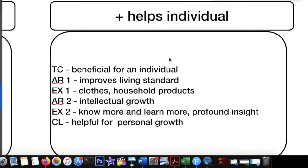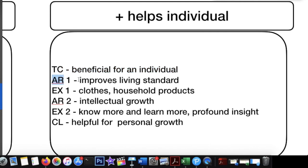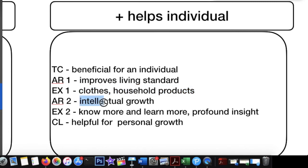Moving to the second body paragraph: the topic sentence mentions it is beneficial for an individual. The first argument is that it improves living standards — when you are able to buy products from different parts of the world, your living standards improve. The explanation includes clothes, household products, and technology.